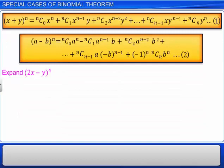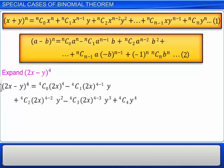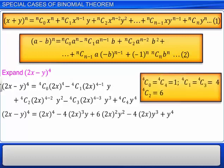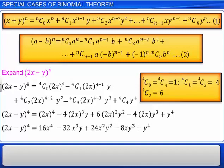Using this expansion, let us expand 2x minus y whole raised to the power of 4. By using the binomial expansion of a minus b whole raised to the power of n, we get the expansion as shown. Substituting the values of the binomial coefficients and then simplifying, we get the expansion as 16x raised to the power 4 minus 32x raised to the power 3 into y plus 24x square into y square minus 8x into y raised to the power 3 plus y raised to the power 4.